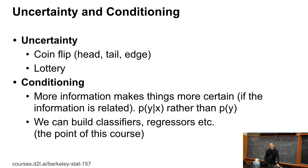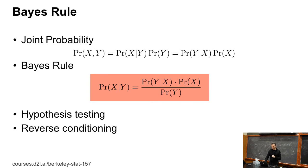In information theory, this is called the information never hurts principle. It's a nice result about conditional entropies. If you take an information theory course, this is going to be one of the first things they'll cover. But we're not going to go into detail here — it really helps.